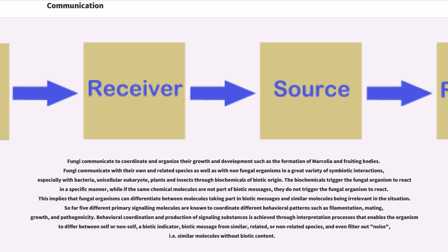So far, five different primary signaling molecules are known to coordinate different behavioral patterns such as filamentation, mating, growth, and pathogenicity. Behavioral coordination and production of signaling substances is achieved through interpretation processes that enable the organism to differ between self or non-self, a biotic indicator, biotic message from similar, related, or non-related species, and even filter out noise, that is, similar molecules without biotic content.